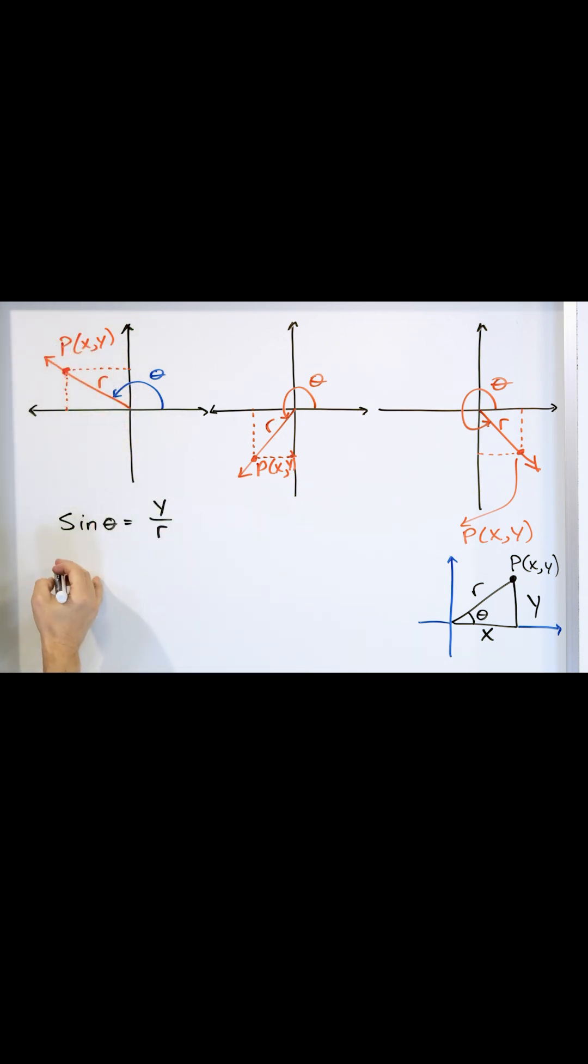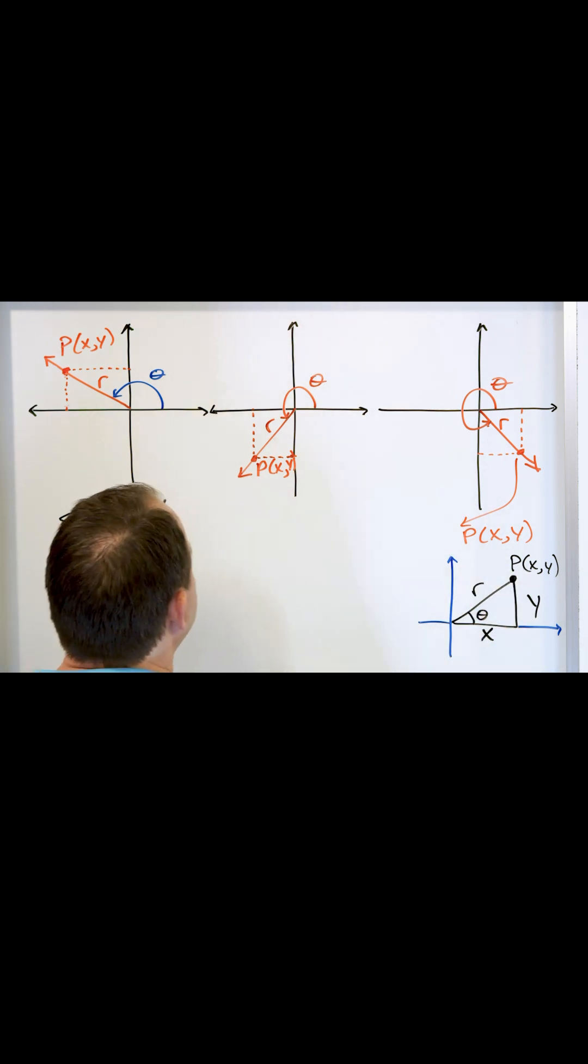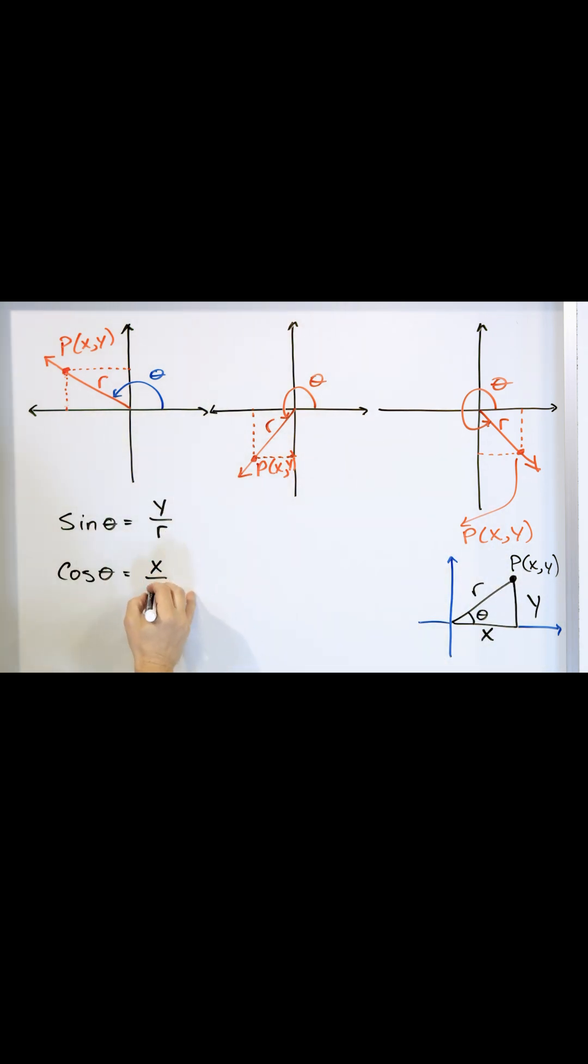So if that's the definition of the sine, what is the definition of cosine? Cosine was adjacent over hypotenuse. The adjacent side in the triangle was the x, so x over r is what we called it. The definition here doesn't change. It's still x over r.